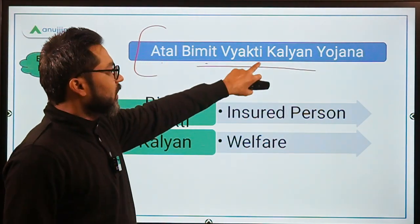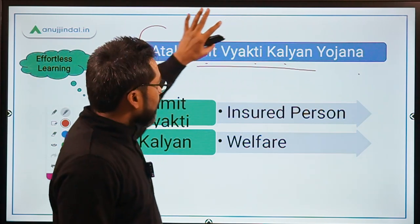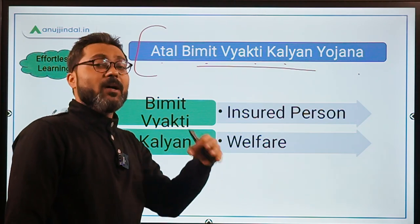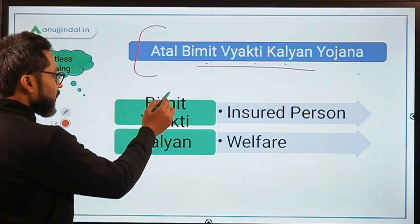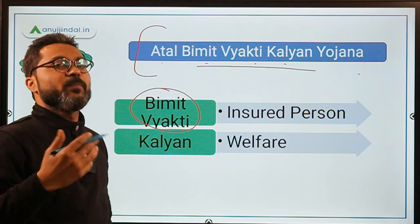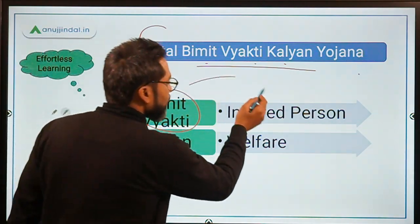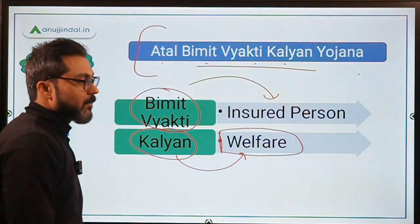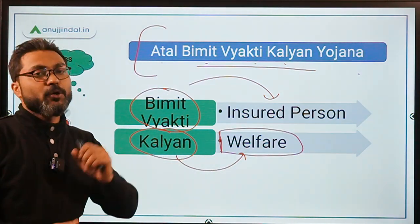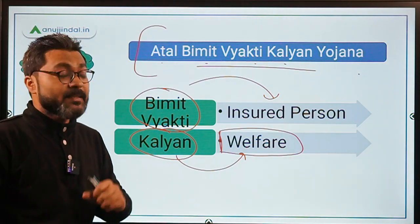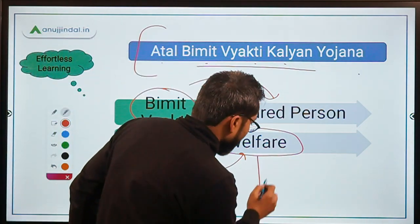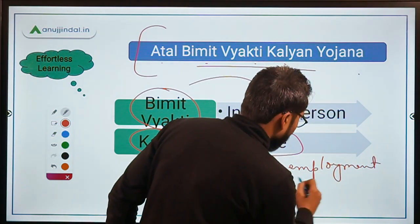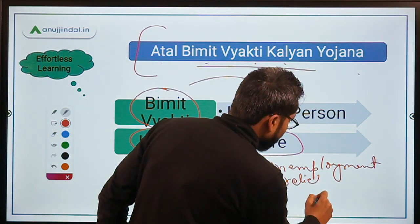Atal Bhimith Vyakti Kalyan Yojna means Atal Insured Person Welfare Scheme. In the name of the scheme there are two or three important words through which we can easily determine the objective. 'Bhimith Vyakti' means insured person, and 'Kalyan' means welfare. So this scheme is providing welfare to the insured person.